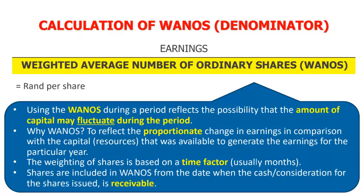That's earnings — the basic explanation for the numerator. It wasn't particularly hard. The most important things with the numerator are the preference shares adjustment, remembering to exclude NCI (non-controlling interests), and remembering to exclude OCI (other comprehensive income). Now let's move on and talk about WANOS — the denominator.